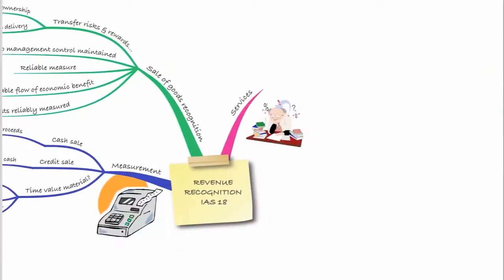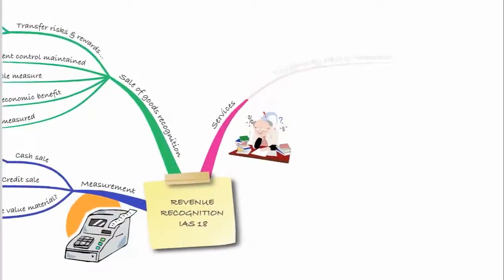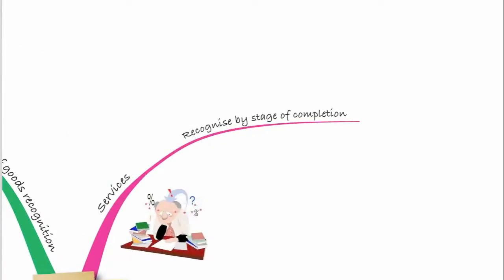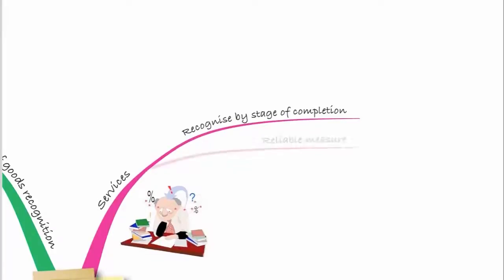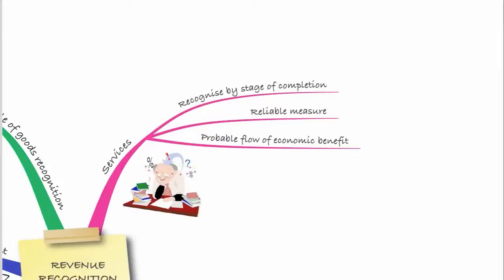It's slightly different for services. If you're selling services rather than goods, they're often provided over a period of time, making it difficult to determine the transfer of risk and rewards of ownership. So for services, you recognise revenue by stage of completion of the contract. You still need a reliable measure and a probable flow of economic benefit, but recognition is based on stage of completion rather than risk and rewards transfer.